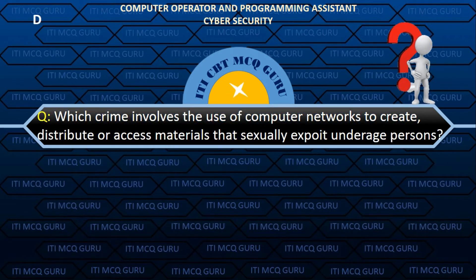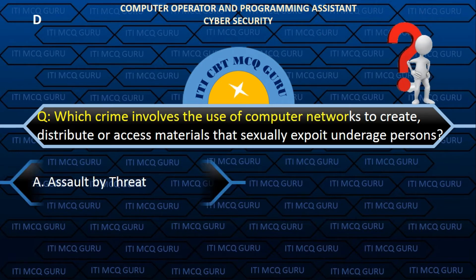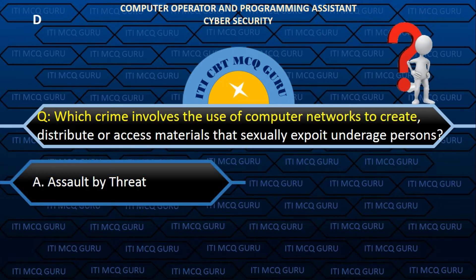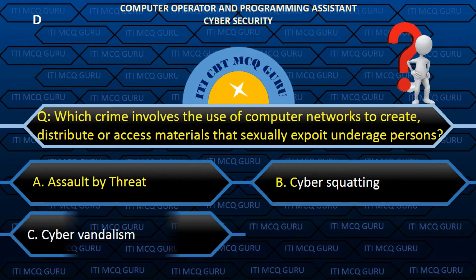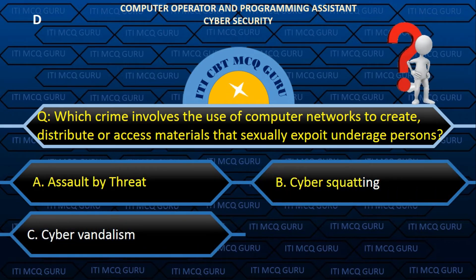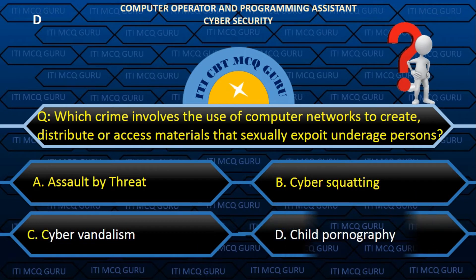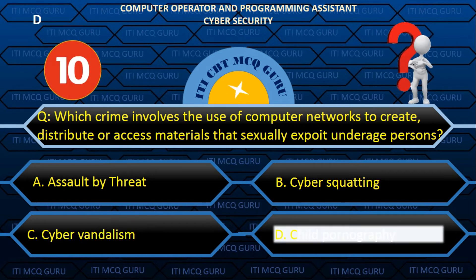Which crime involves the use of a computer network to create, distribute or access materials that sexually exploit an underage person? Answer: D. Child pornography.